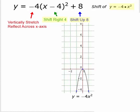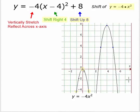Here I have y equal negative 4x squared graphed. It is an upside down parabola with a vertex of 0, 0. When we go 1 to the right, we go down 4; when we go 1 to the left, we go down 4. Now I am going to shift it. The vertex is shifted right 4 and up 8, so it has a location of 4, 8. Then we have two points: go 1 right, down 4; 1 to the left, down 4. And we get that same shape shifted up to the new location.